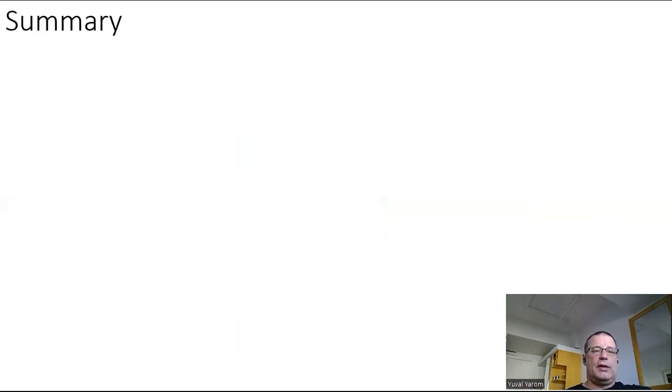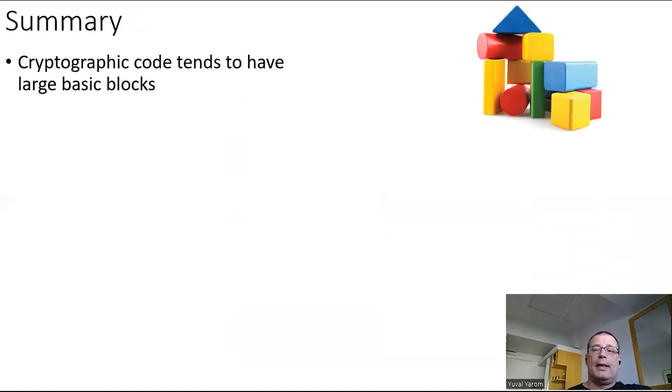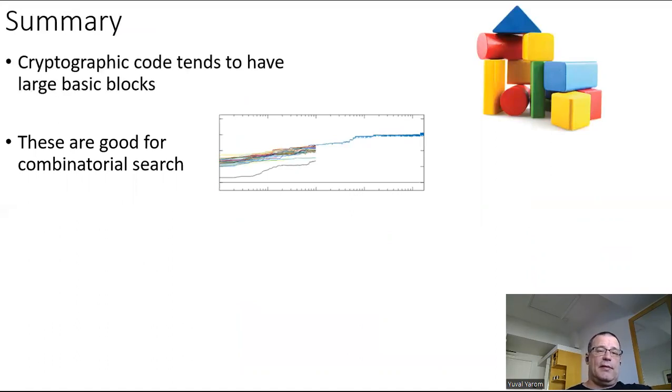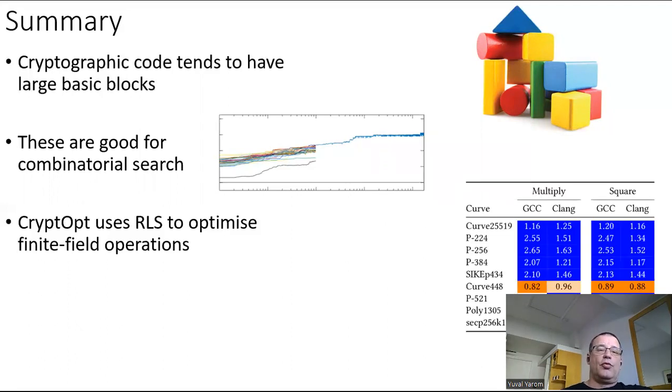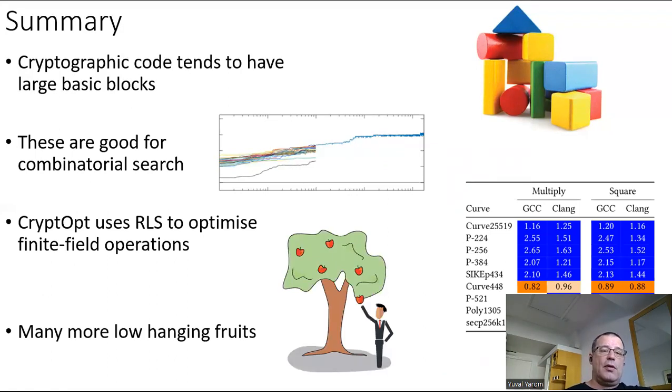So in summary, we discussed that cryptographic code tends to have large basic blocks. And these basic blocks are what makes it particularly suitable for combinatorial search, just because they are first large, which makes them unsuitable for traditional compilers. And they are simple, which makes it easy to mutate and maintain the correctness. So we built Cryptopt that uses random local search to optimize basic blocks for finite field operations. We get relatively good results. And one of the main claims that we have is that there are many more low hanging fruits in this space. So we encourage anyone who is looking for an interesting project to try optimizing cryptographic code. Thank you for listening, and I will now be happy to take questions.